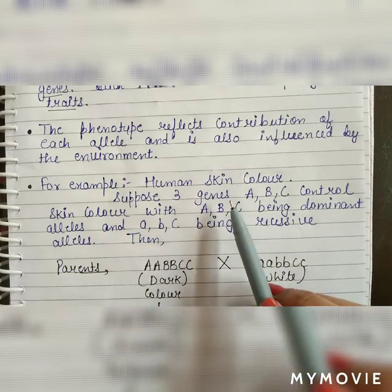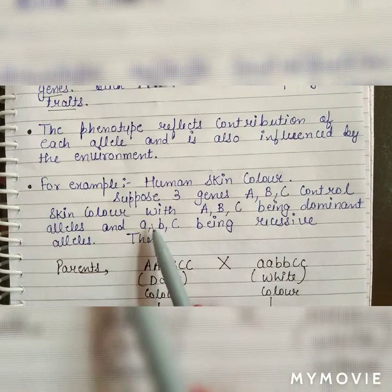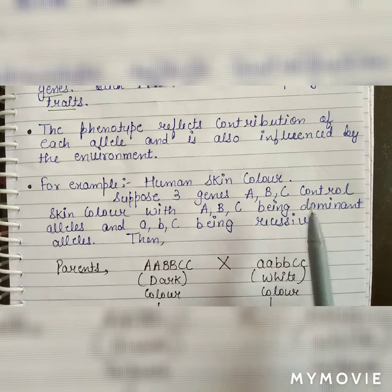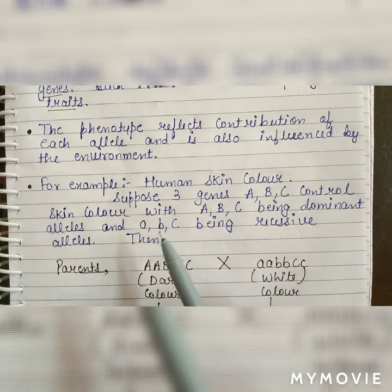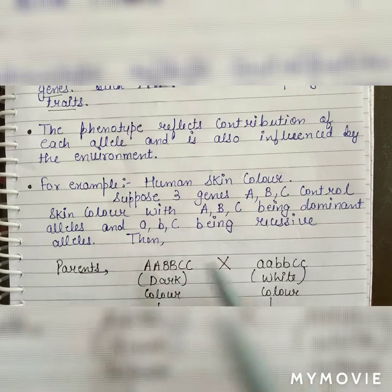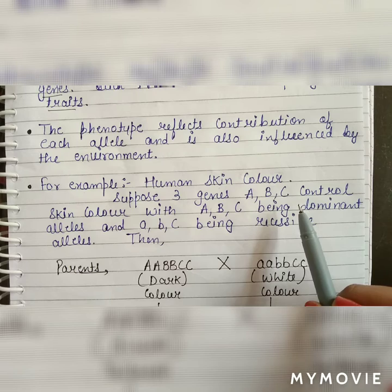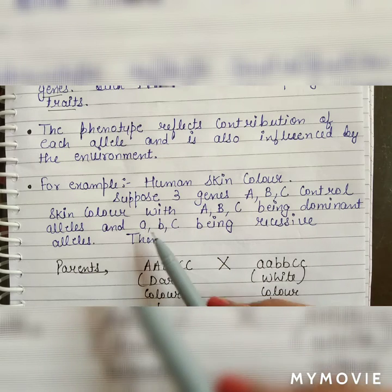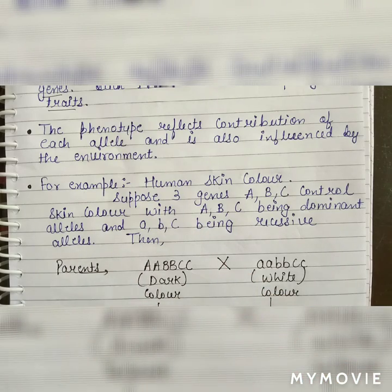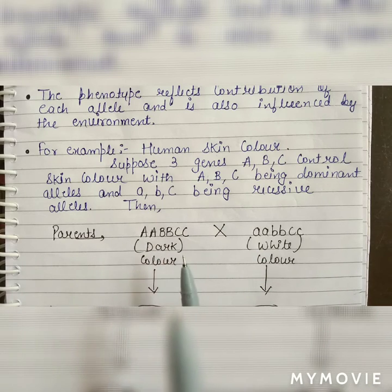Suppose three genes — capital A, capital B, and capital C — control skin color, with capital A, capital B, and capital C being dominant alleles, and small a, small b, and small c being recessive alleles. जो genes capital A, capital B, and capital C हैं वो dominant alleles हैं और small a, small b, small c recessive alleles हैं जो skin color को control कर रहे हैं।